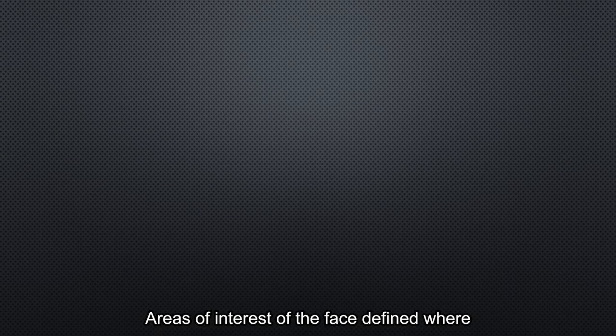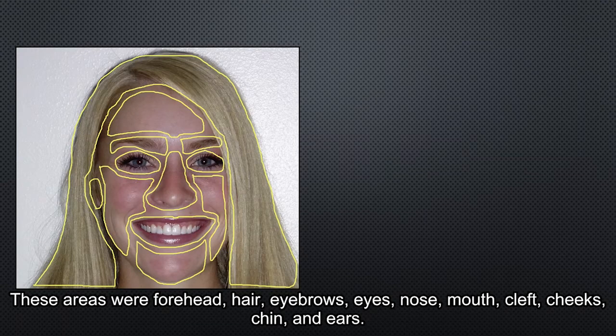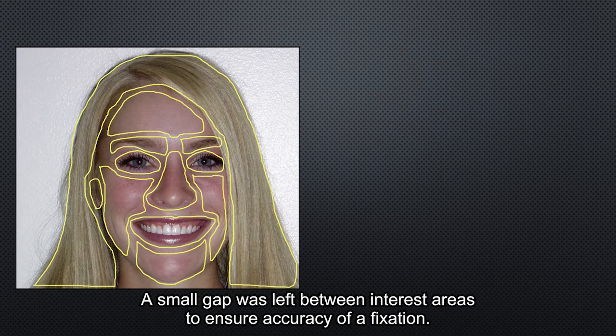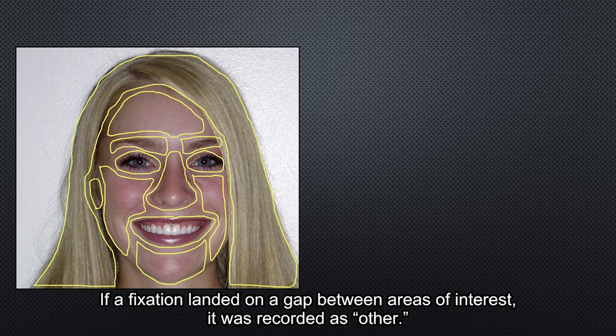The areas of interest of the face defined where the viewer gaze fell for 18 milliseconds or longer when viewing an image, creating a map of the face. The areas were: forehead, hair, eyebrows, eyes, nose, mouth, cleft, cheek, chin, and ears. Gaps were left between interest areas to ensure accuracy of the fixations. If a fixation landed on a gap between areas of interest, it was recorded as 'other'.